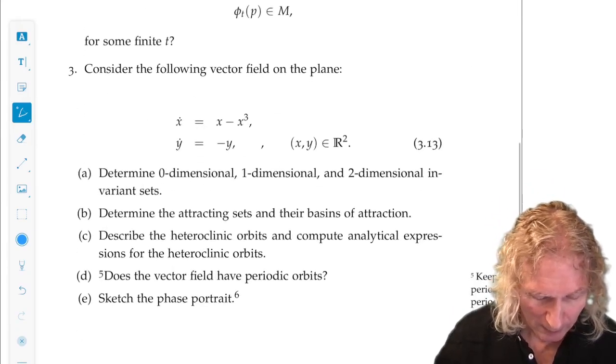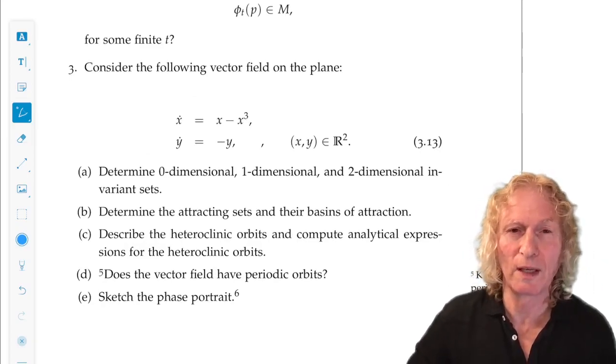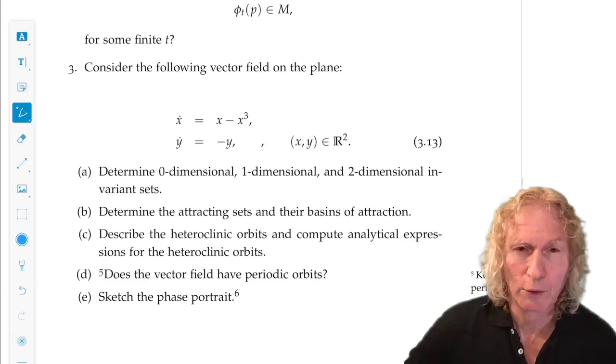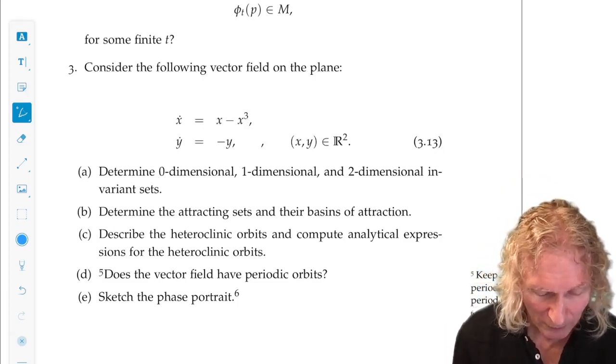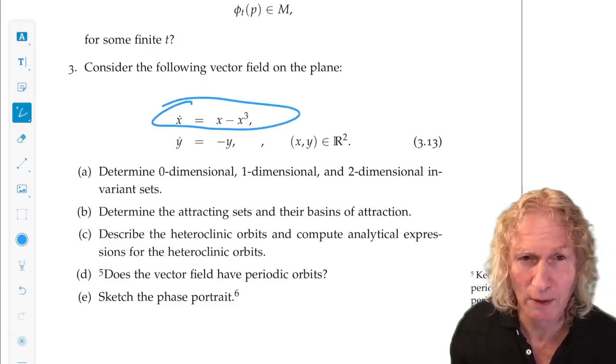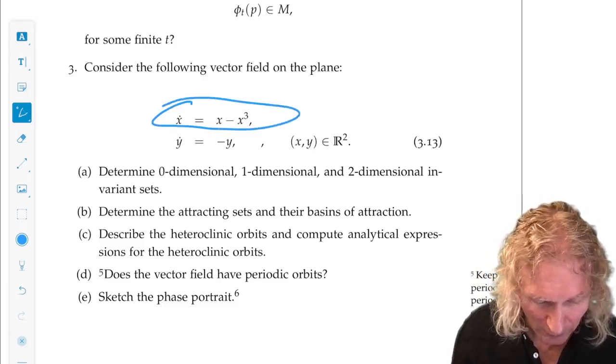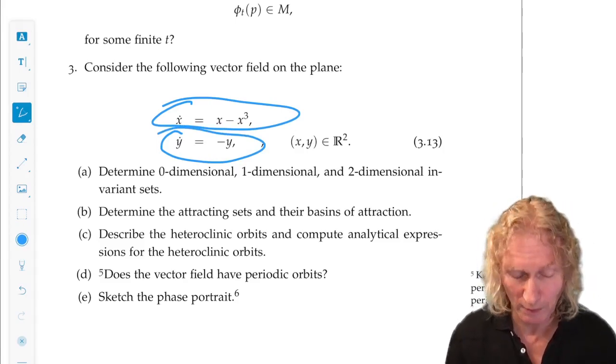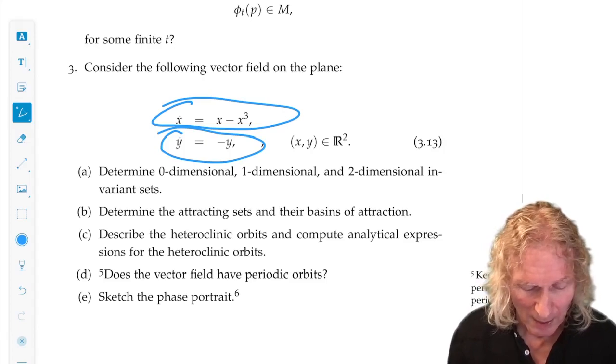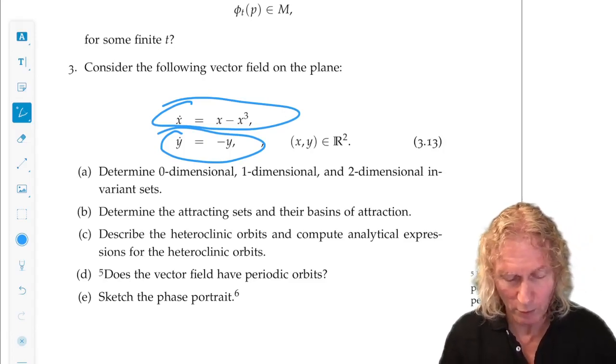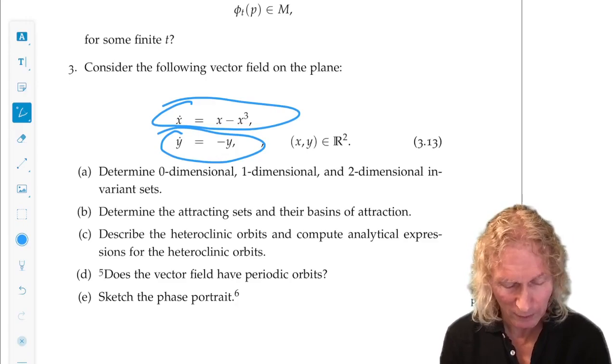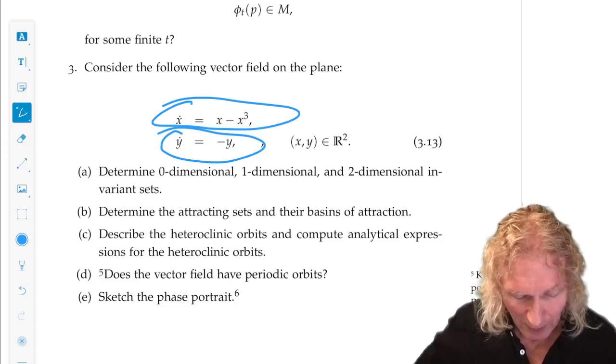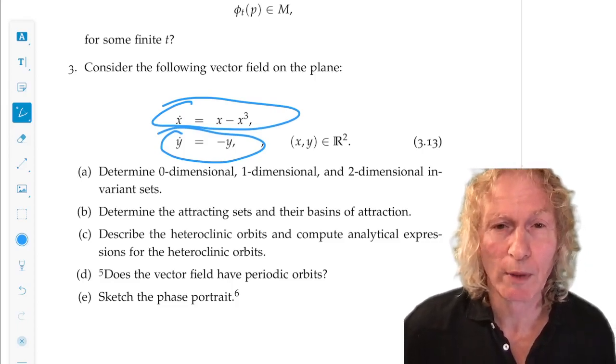Finally, exercise three is very much the same as the example from the last lecture. We have a two-dimensional autonomous system. You've already seen the first component. And you saw this one in the last example, but in the x component. Now you see exactly the same thing in the y component. And I'm asking you to determine the zero-dimensional, one-dimensional, and two-dimensional invariant sets, attracting sets and their basin of attraction, heteroclinic orbits. Does the vector field have any periodic orbits?